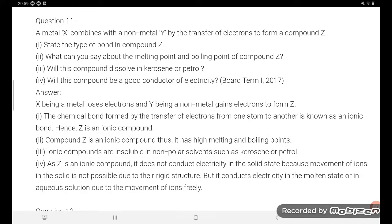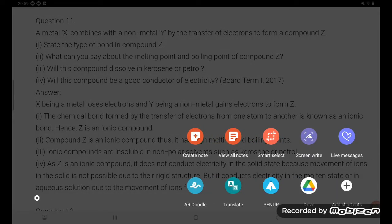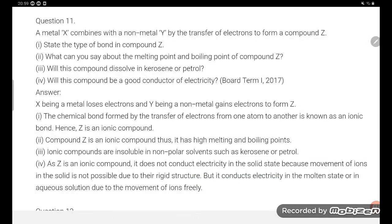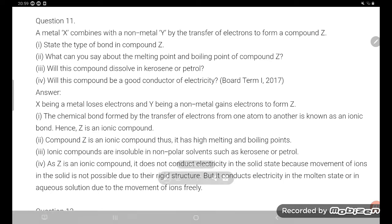Hello students, let's try to understand one more problem. A metal X combined with a non-metal Y by the transfer of electrons to form compound Z. They are asking: state the type of bond formed in compound Z.